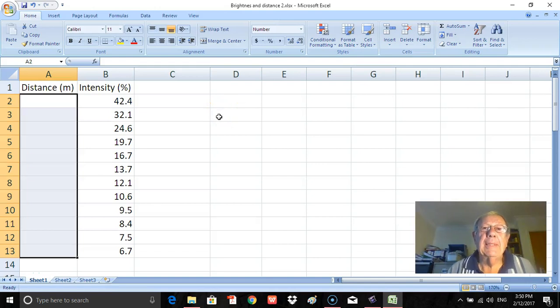Well, here we are in the spreadsheet and we're ready to process the results. Now what I've got already here on the spreadsheet is the intensity, and I'll put those down here. Then the distance I'll put that in.